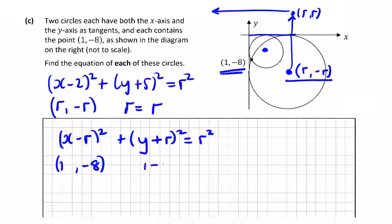So we're going to get 1 minus r squared, plus, replace x with 1 and y with minus 8, minus 8 plus r squared equals r squared. Looks like we're going to get a quadratic here.